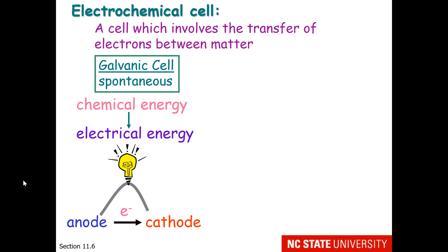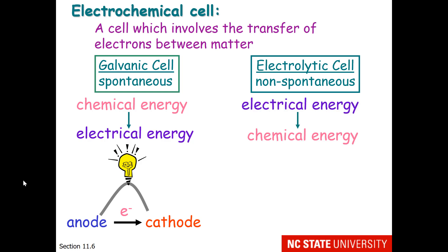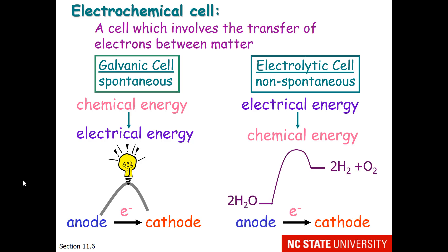There's another type of electrochemical cell. This is called an electrolytic cell, and this is for non-spontaneous reactions. In electrolytic cells, electrical energy is converted into chemical energy. An example would be running electricity into water in order to make hydrogen gas and oxygen.